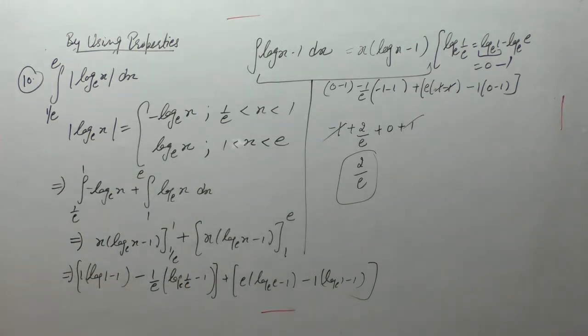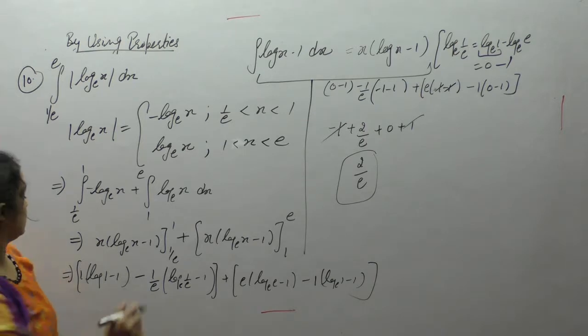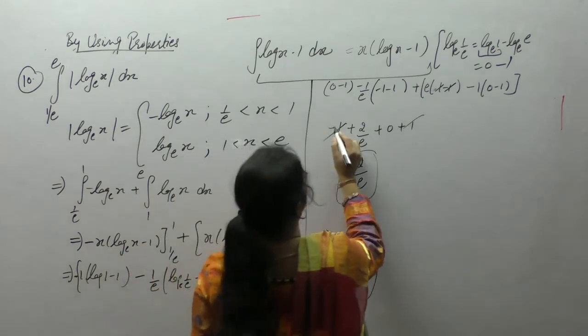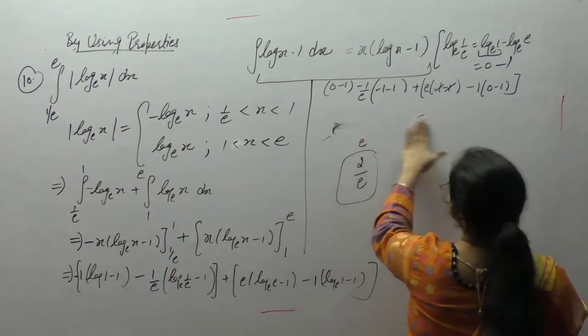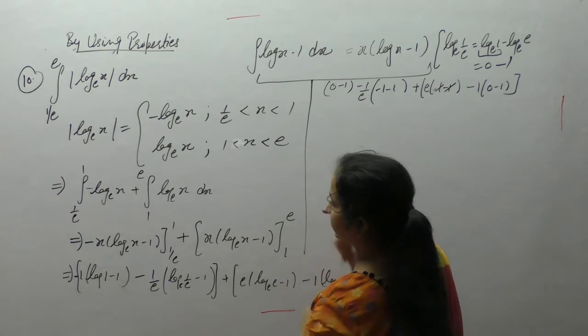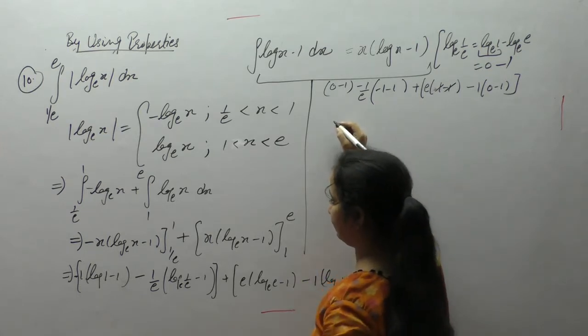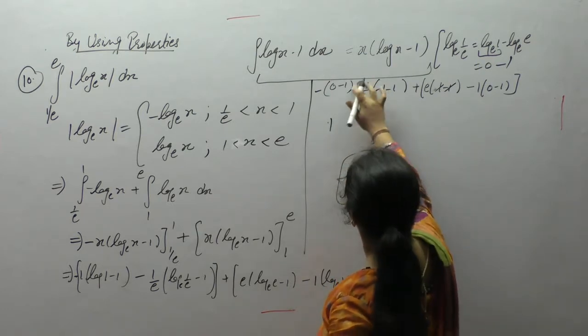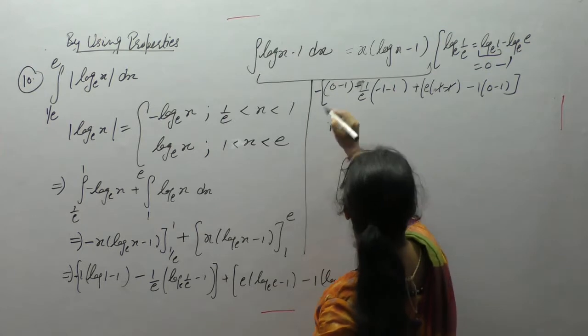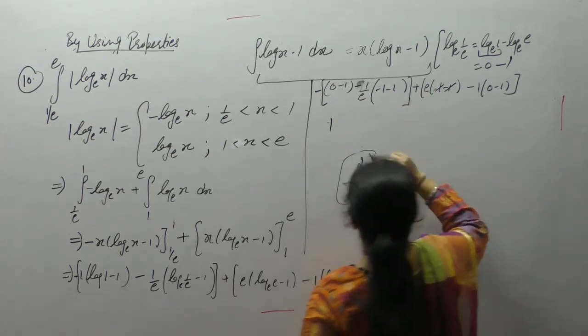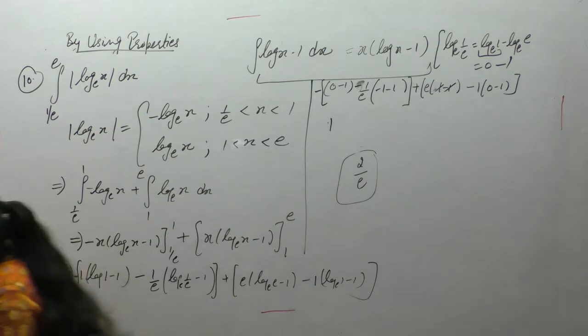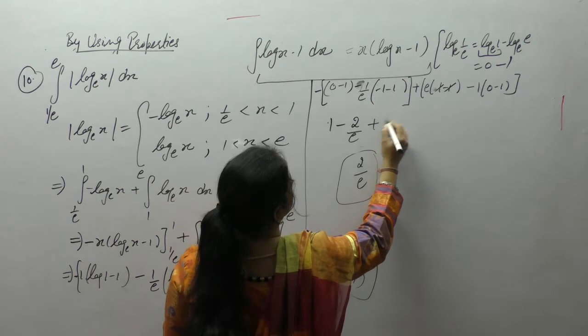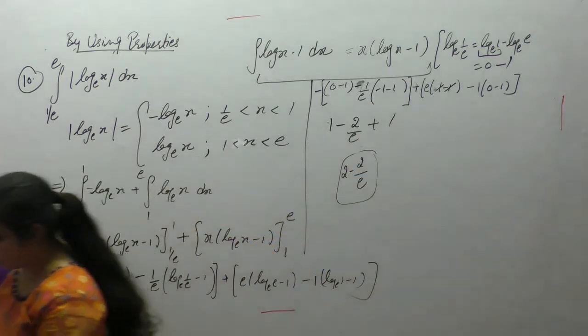So we put negative sign here, minus minus plus 1, and plus 2/e minus 2/e, plus 1. That's 2 minus 2/e.